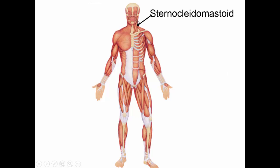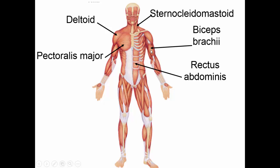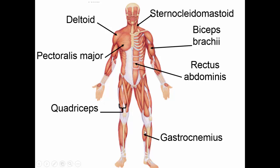The sternocleidomastoid can be seen better here — you can see how it comes down to the sternum and the clavicle, and when it contracts, it lets you flex the neck. The pectoralis major is the large chest muscle; when it contracts, it lets you bring your arm across your chest, a movement you do when opening a door. The rectus abdominis is the front muscle of the abdomen that lets you flex the trunk. The deltoid is the large triangular muscle in your shoulder that helps you abduct your arm. The biceps brachii is in the front of the arm — in the supinated position, it allows you to flex at the elbow. The quadriceps is a group of four muscles that helps you extend the knee. The gastrocnemius is the large fleshy calf muscle — it crosses both the knee and ankle joint, letting you point your toe (plantar flex your foot) as well as flex your knee.